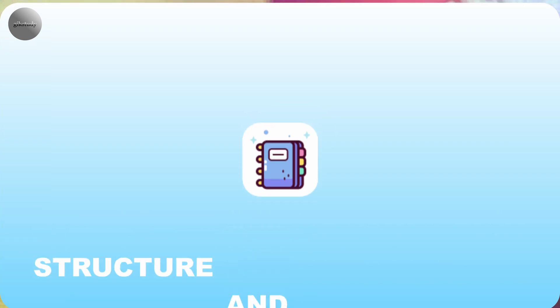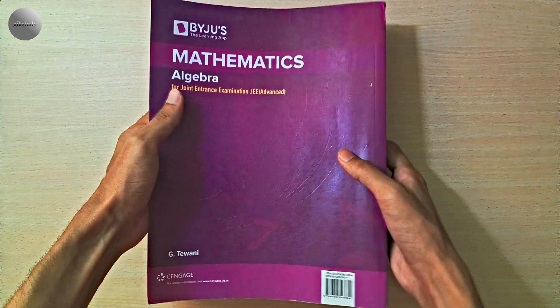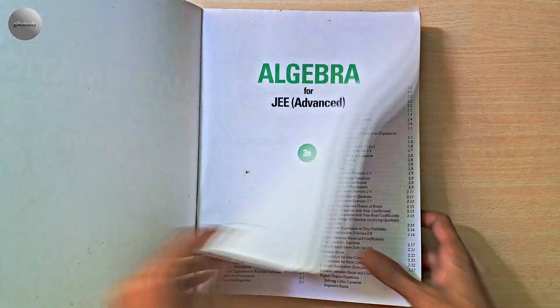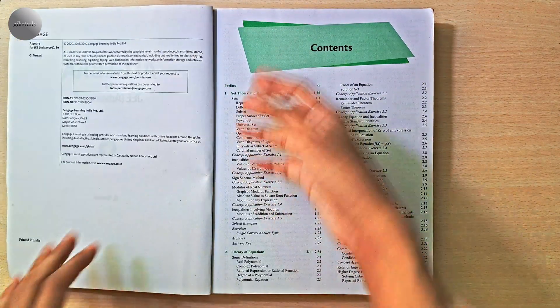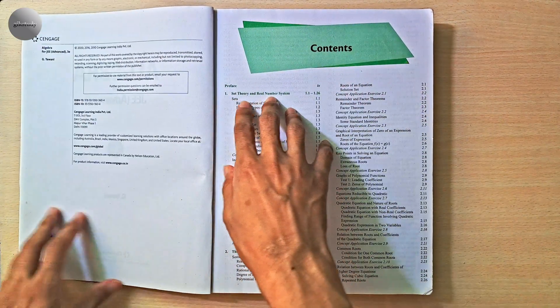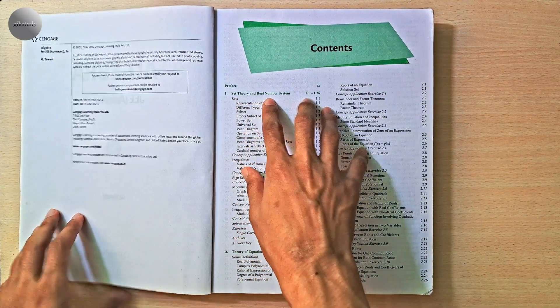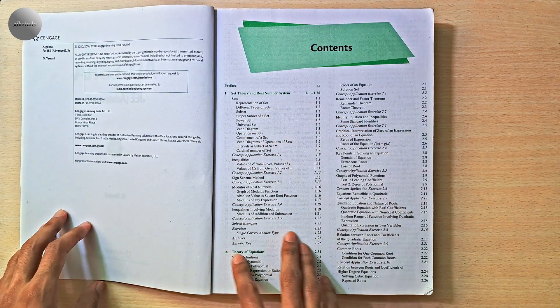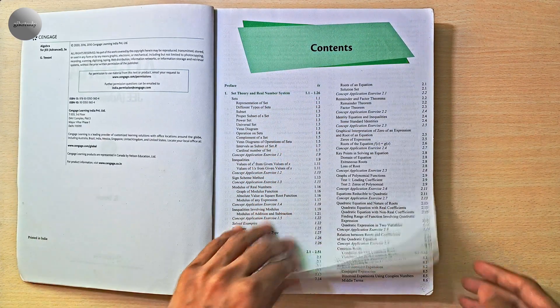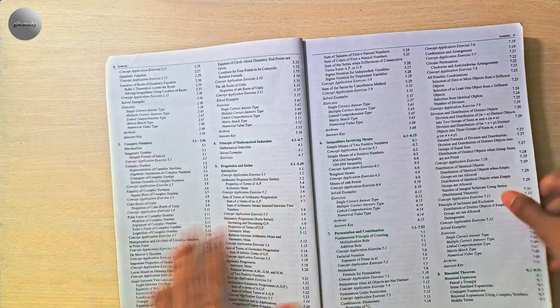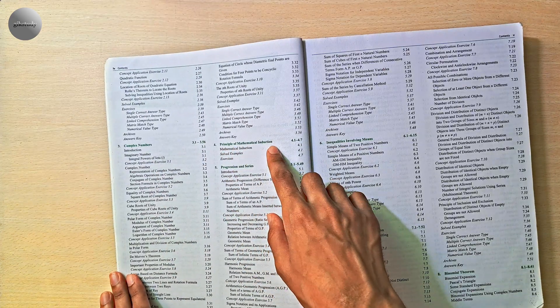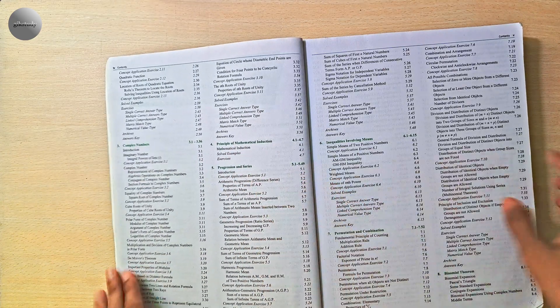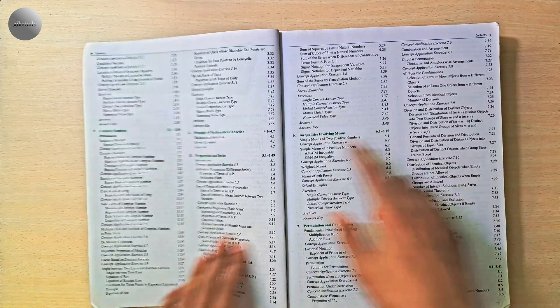Now let's talk about the book first. You can see the cover. In the contents page, the first chapter is Set Theory and Real Number System. After that, Chapter 2: Theory of Equations. Then Chapter 3: Complex Numbers. Then Chapter 4: Principle of Mathematical Induction. Then Chapter 5: Progression and Series.